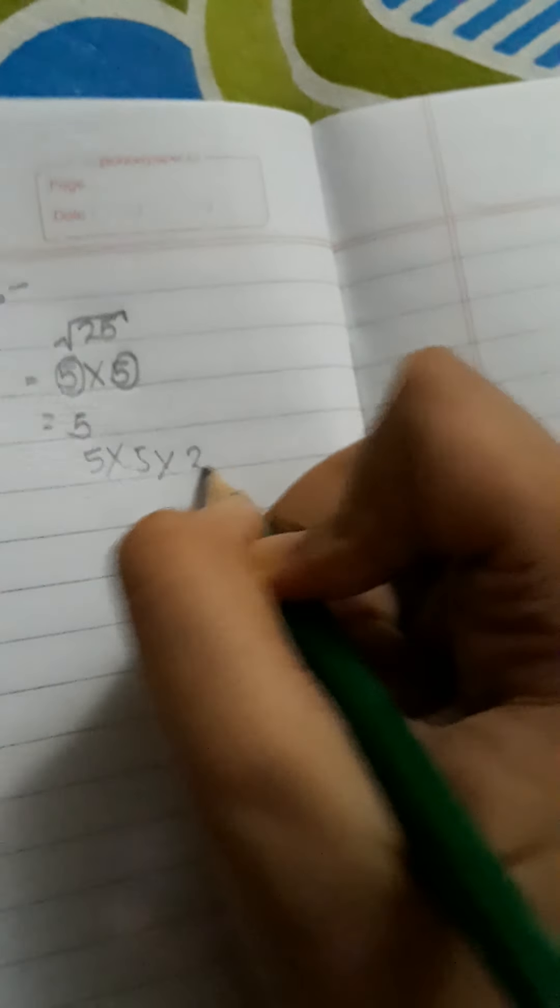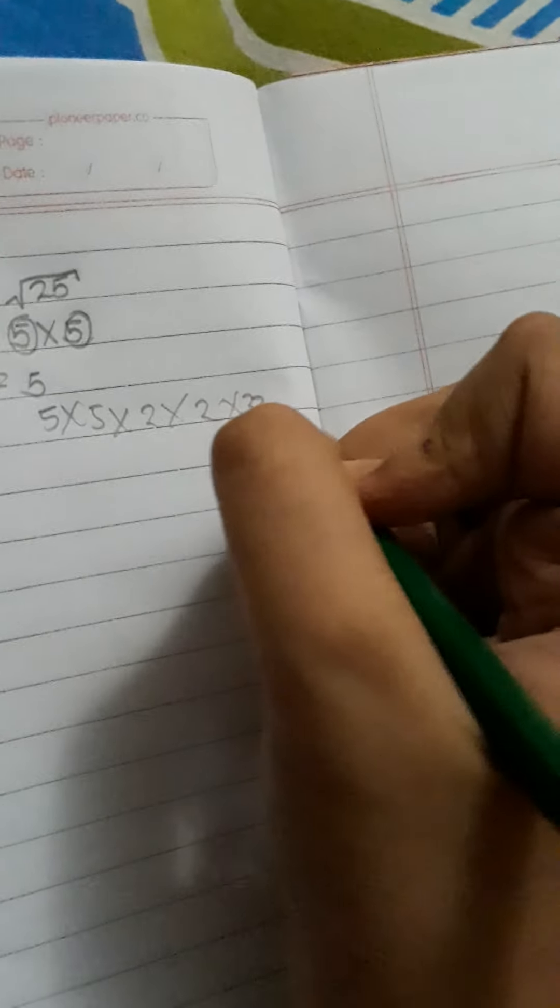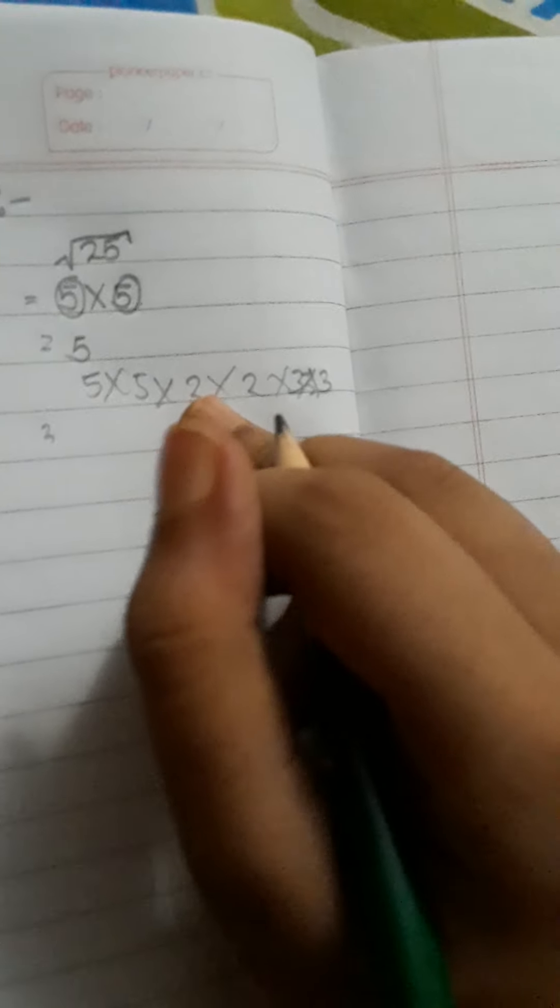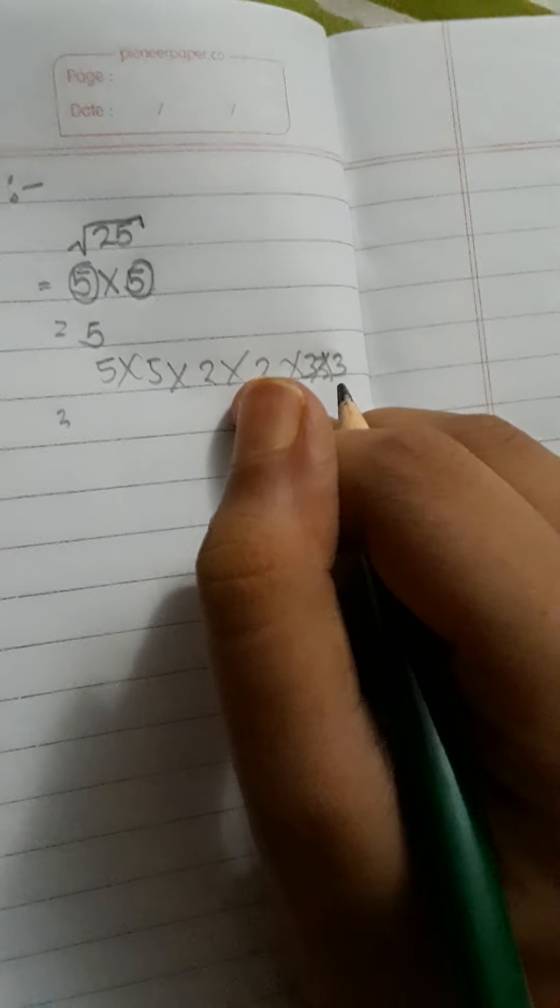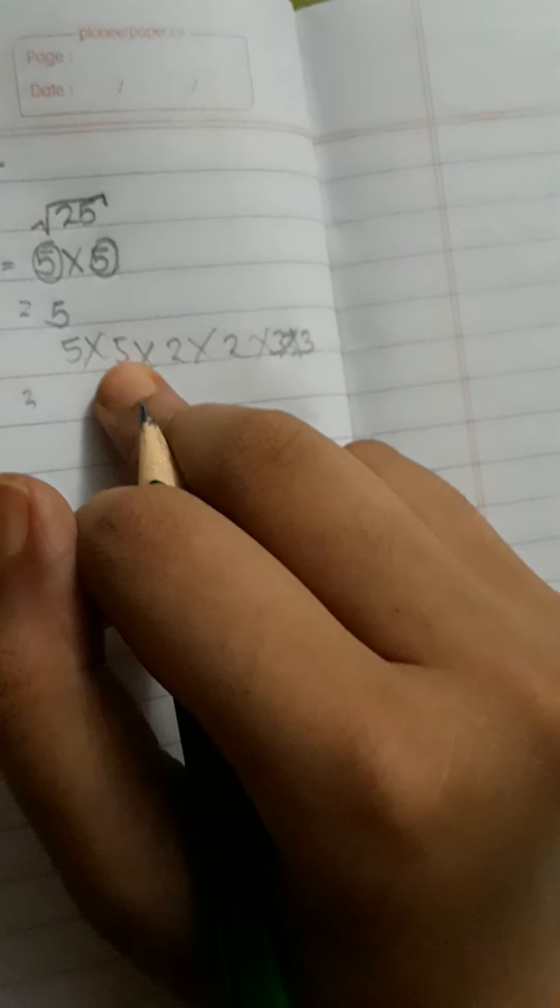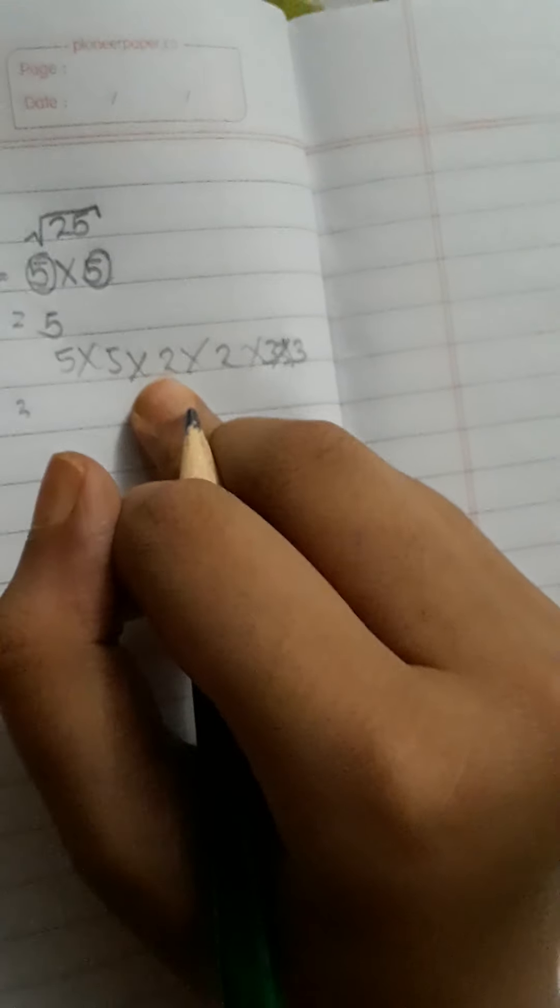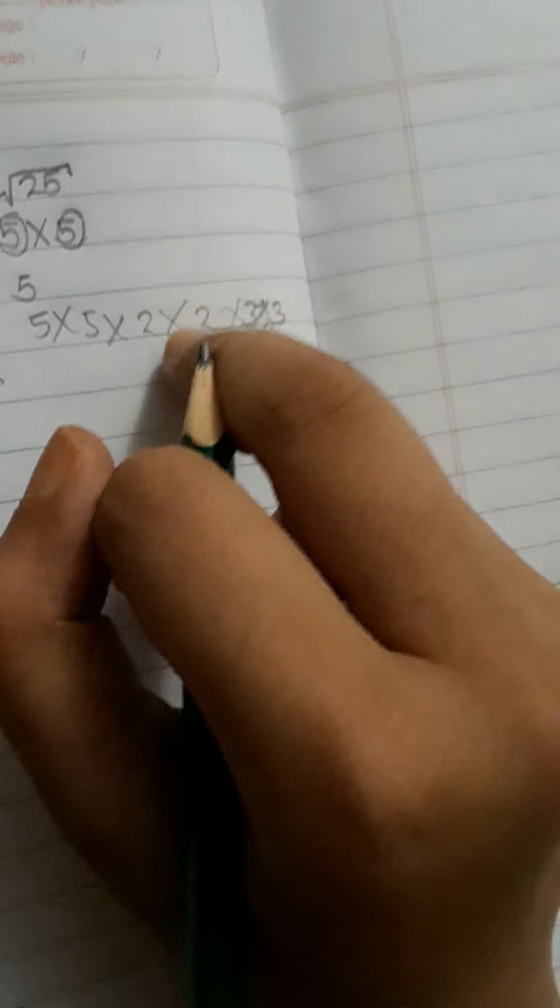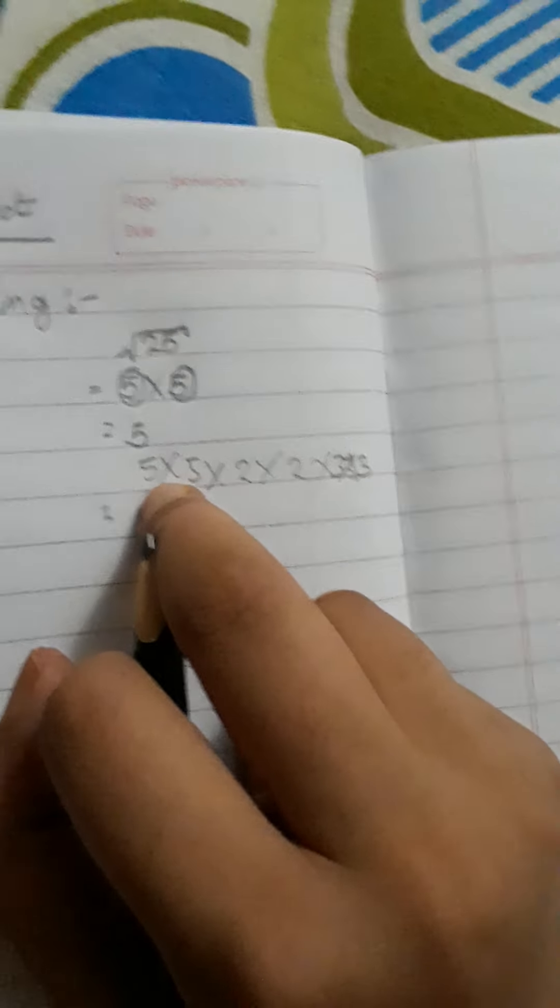If for example we had 5 into 5 into 2 into 2 into 3 into 3, which factorizes... Let me see: 3 to 9, 9 to 18, 18 and 5 to 10, so 180 and 5.